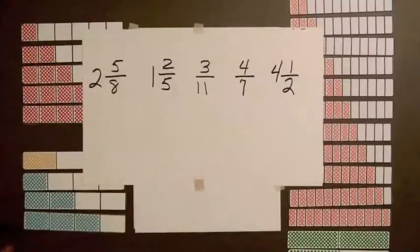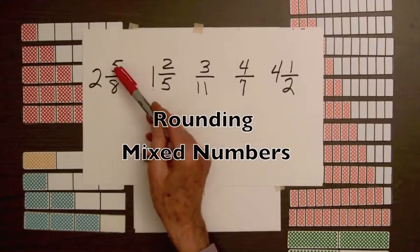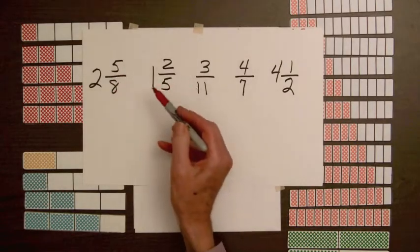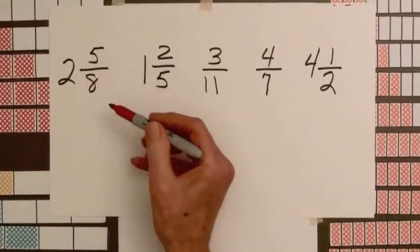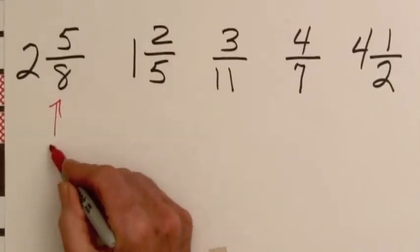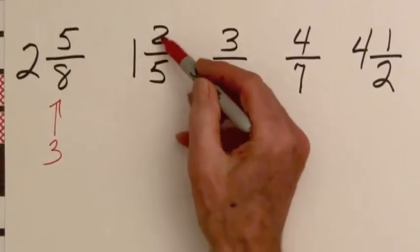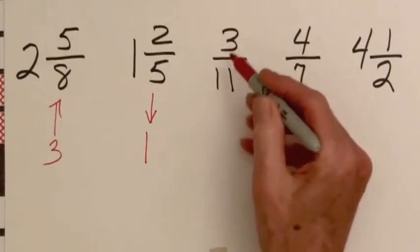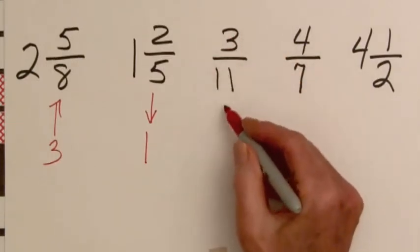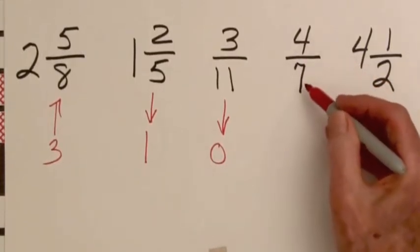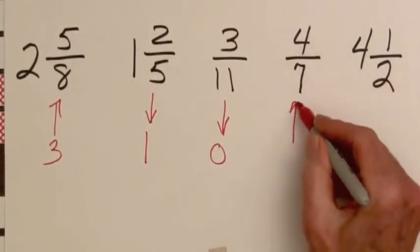Now in rounding mixed numbers we only need to compare the fraction part to 1 half when we are rounding to the nearest whole number. This fraction is greater than 1 half, 5 out of 8 parts, so 2 5 8ths is going to round up to 3. This fraction is less than 1 half so this mixed number is going to round down to 1. This fraction is less than 1 half so this is going to round down to 0. 4 is greater than half of 7, this fraction is going to round up to 1.